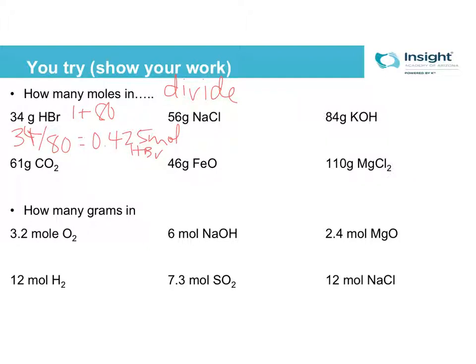And then on this side, how many grams in 3.2 moles? So I'm starting from the 3.2 moles and I need to go to grams. So that means I need to multiply for this set. So oxygen O2 is 16 plus 16, because that little 2 is important. So that means my molar mass here is 32. So I'm going to do 3.2 times 32, which equals 102.4 grams of O2. And there you go.